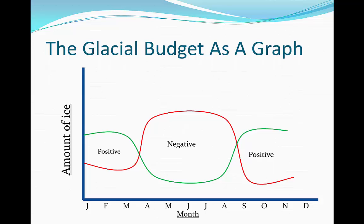Then in the colder months, such as October, November and December, temperatures freeze all the water that has originally melted from the summer. And as a result, we have a positive balance because we're getting more accumulation than we are ablation.